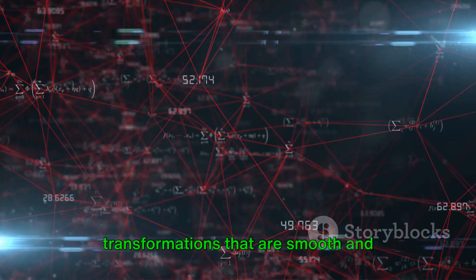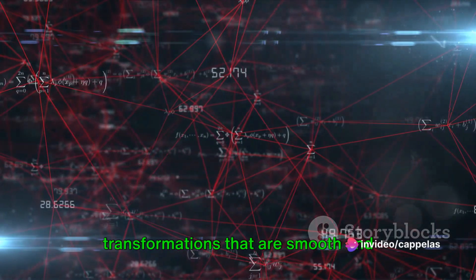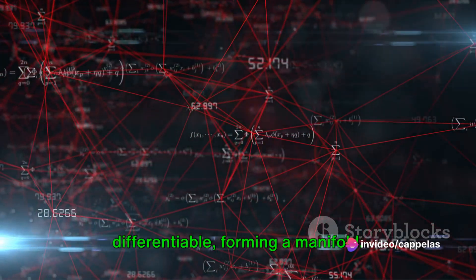Essentially, a Lie group is a set of transformations that are smooth and differentiable, forming a manifold.